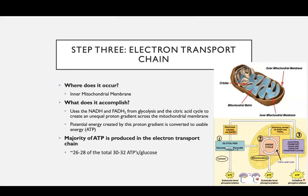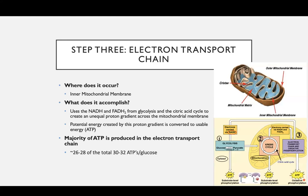And finally, that brings us to step three: your electron transport chain. Where does that occur? It occurs in the inner mitochondrial membrane — that's that inner layer. What does it accomplish? All that NADH and FADH2 that we've been producing in glycolysis and the citric acid cycle creates an unequal proton gradient across the mitochondrial membrane — there's going to be more protons on one side than the other. The potential energy created by this proton gradient is converted into usable energy, ATP. It's in this process that the majority of ATP is produced in respiration — 26 to 28 of the total 30 to 32, some say 34 ATPs per glucose, come from the electron transport chain.